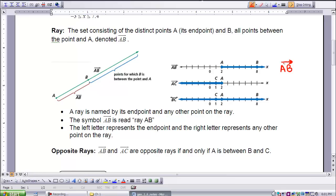So if you look here, this is ray AC. A is the endpoint, C happens to be a point on the ray, but notice, A is listed first, C is listed second, even though you see it the other way on the actual figure.